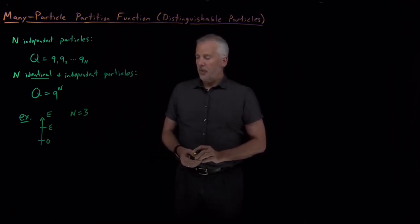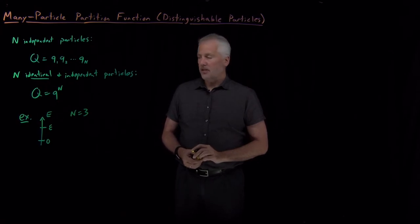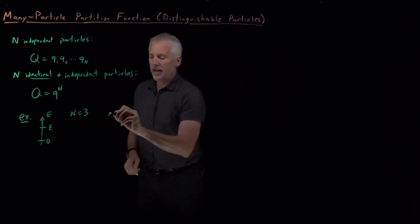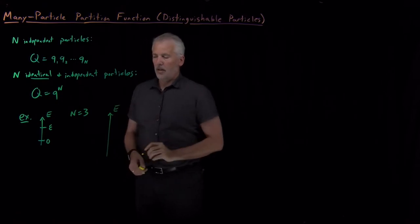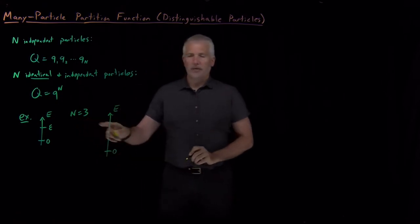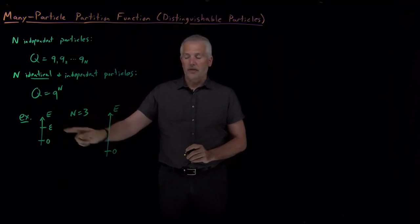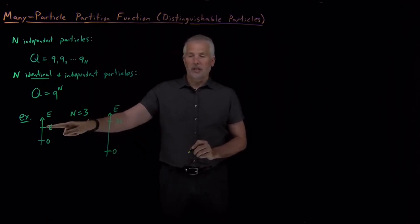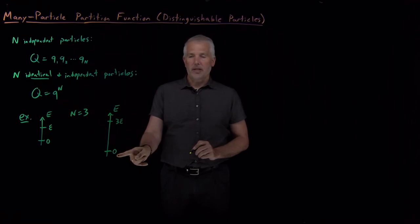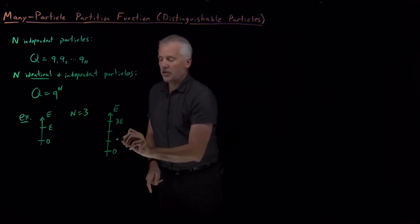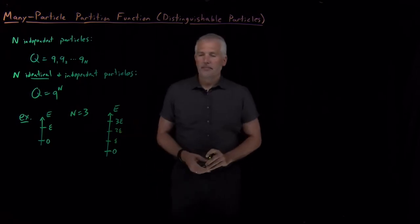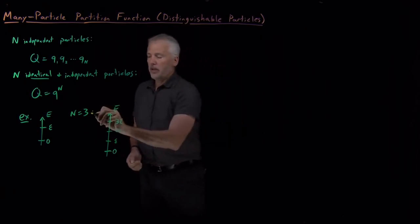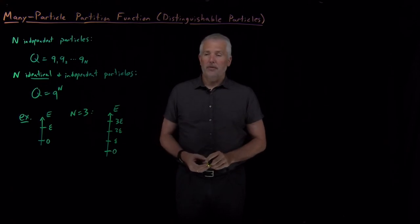There are a couple of different ways we could calculate the partition function for that system. For a single particle, the energies are only zero or epsilon. If I have all three particles in a box, each one of which could have an energy of zero or epsilon, the total energy could be as high as three epsilon if all three molecules are in the excited state, or zero if they're all in the ground state, or epsilon or two epsilon if one or two molecules are excited.